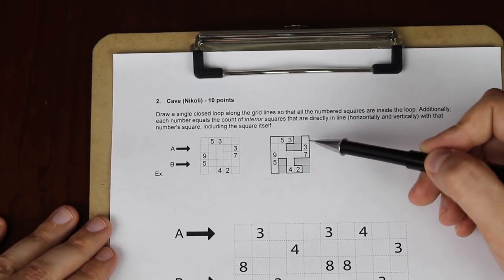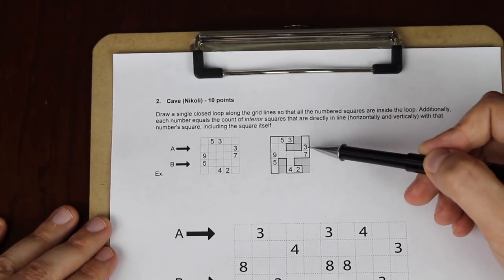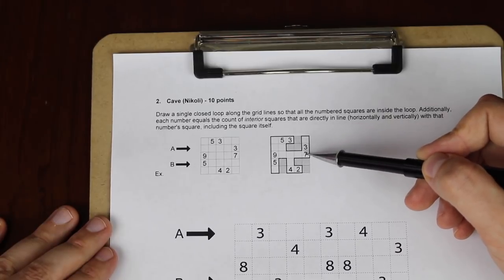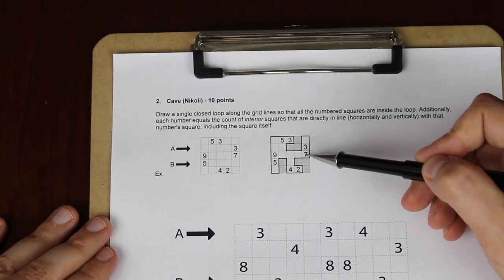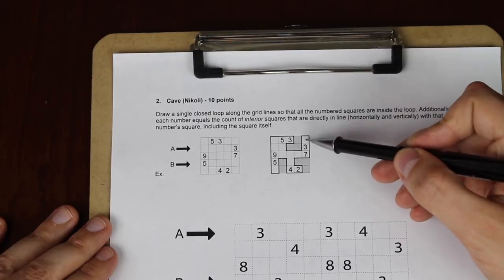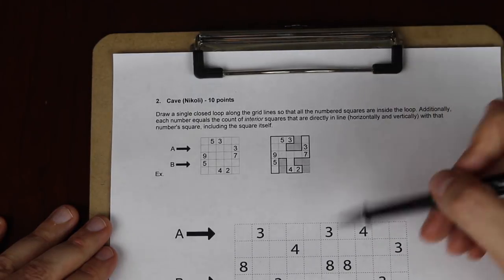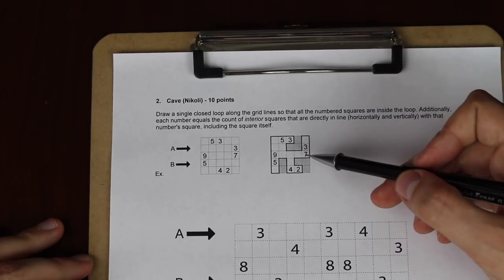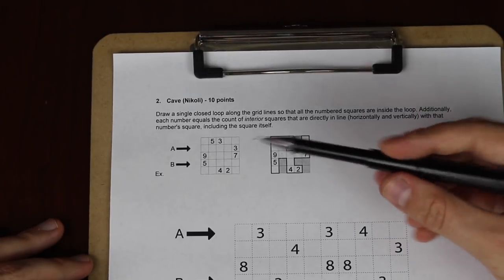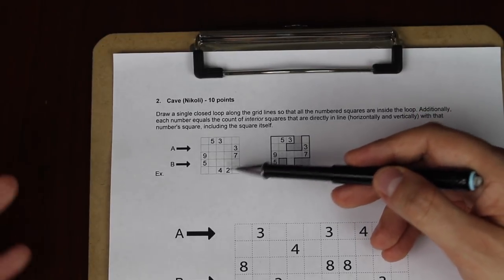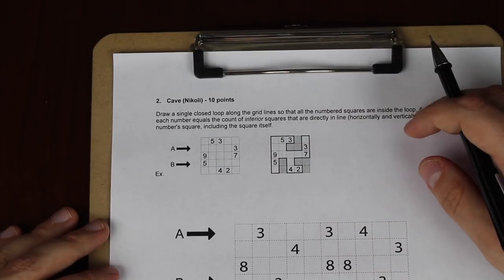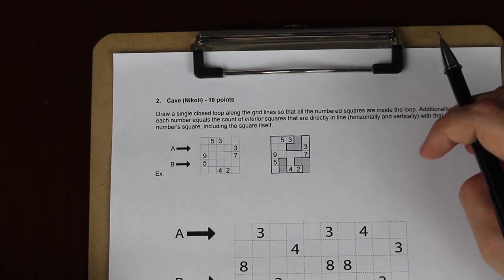This three sees three squares total on the inside of the loop. One, two, three. This seven sees seven squares. One, two, three, four, five, six, seven. And so on and so forth. And so the object is to create that loop from the initial puzzle, which would be something like what's shown here. Okay, without further ado, let's get started.